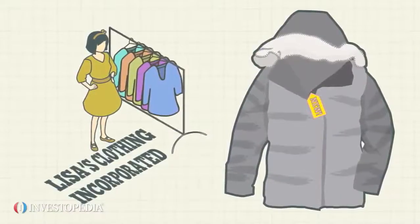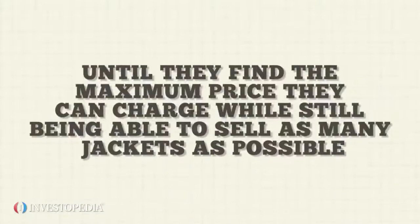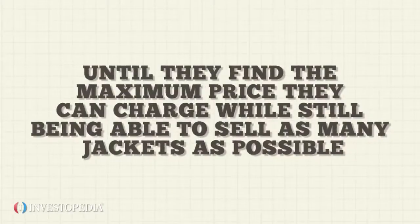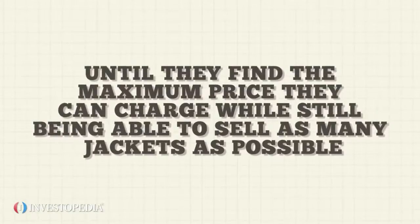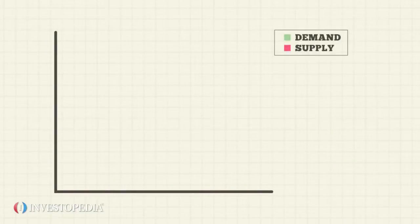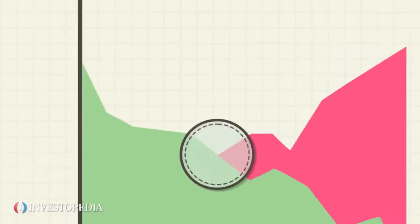Lisa's Clothing then decides to increase the price above $100 until they find the maximum price they can charge while still being able to sell as many jackets as possible. In this case, 5,000 jackets at $500 each is that sweet spot, known as the equilibrium point.